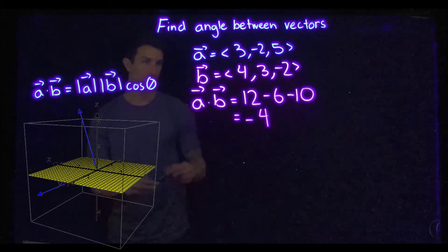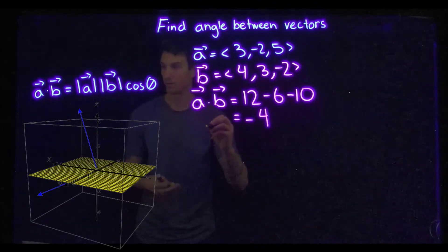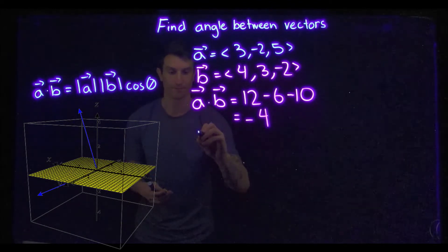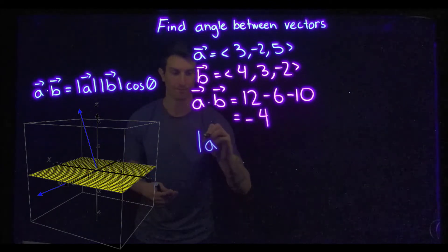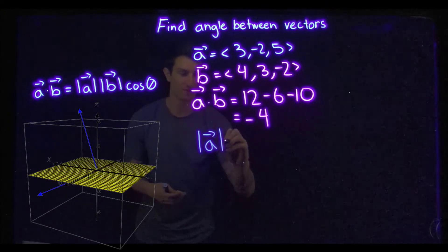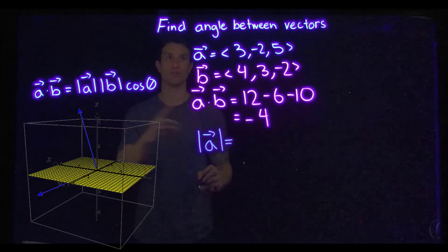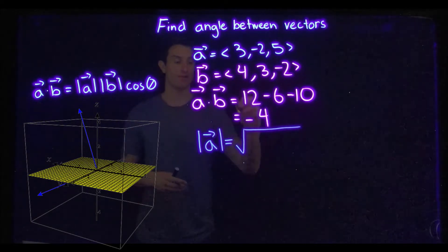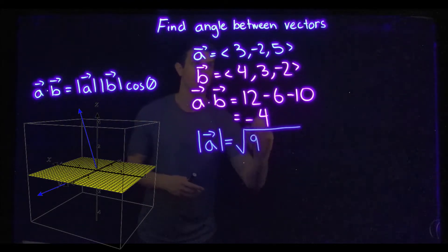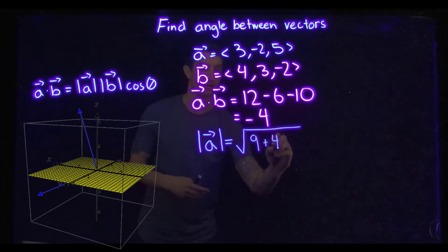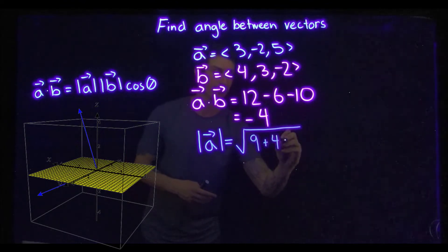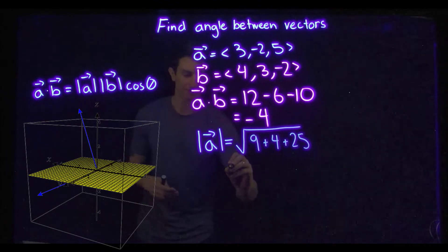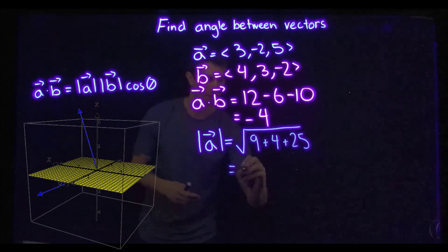The magnitude of a is the square root of each component squared: the square root of 3 squared plus (-2) squared plus 5 squared, which is the square root of 9 plus 4 plus 25.